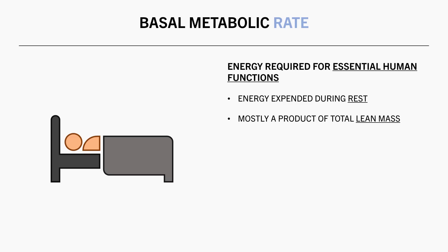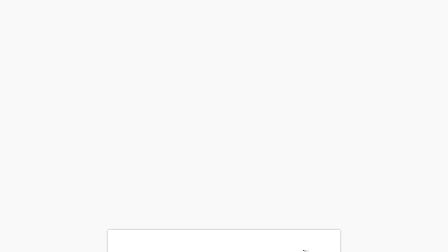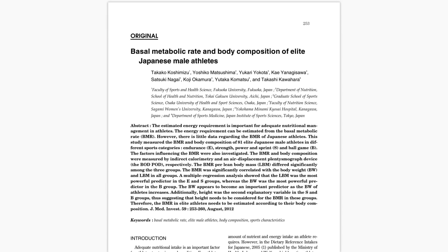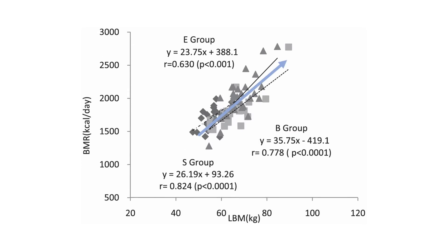Basal metabolic rate is mostly a product of how much total lean mass we currently have. Those with more lean mass typically have a higher basal metabolic rate, while those with less lean mass typically have a lower basal metabolic rate. This study measured body composition and basal metabolic rate of 81 elite Japanese male athletes from different sport categories, and found that basal metabolic rate was fairly strongly associated with lean body mass across all sport categories.